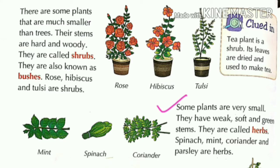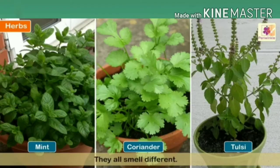Now let's read the next paragraph: herbs. Some plants are very small. They have weak, soft, and green stems. They are called herbs. Spinach, mint, coriander, and parsley are herbs. As you can see in the pictures of mint, coriander, and tulsi, they are very small plants with soft and green stems. That's why they are called herbs. They also all smell different.